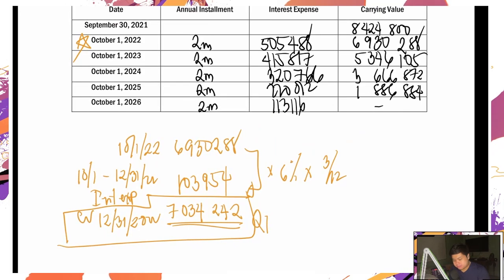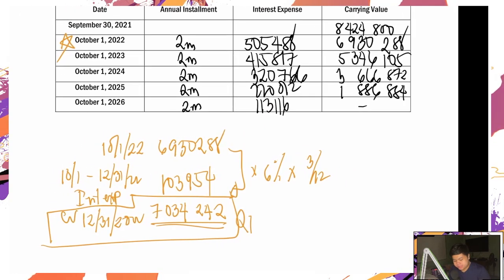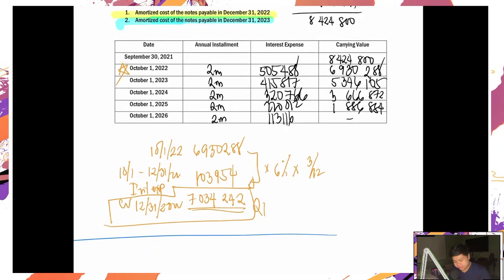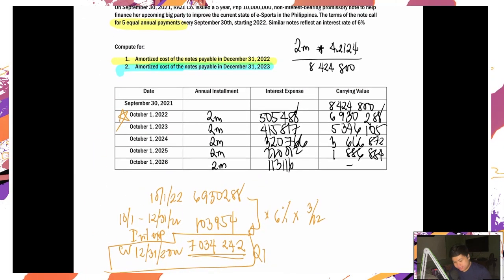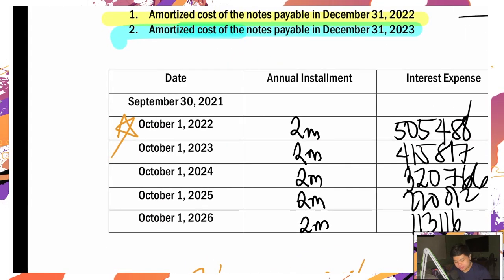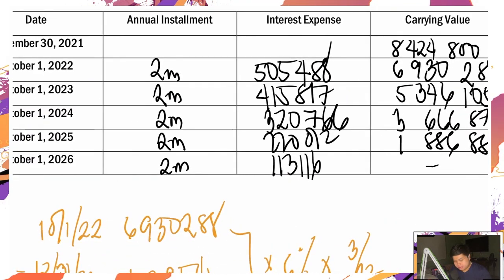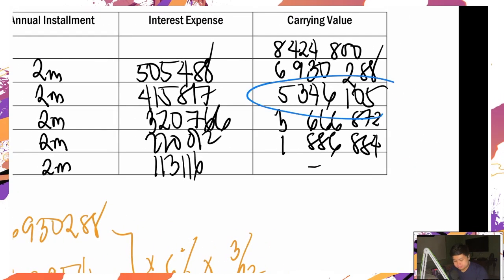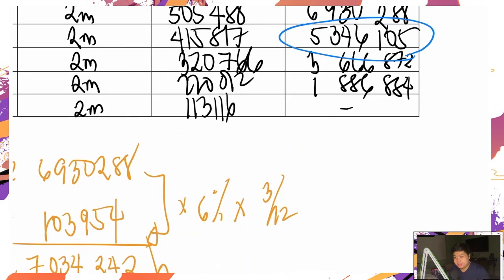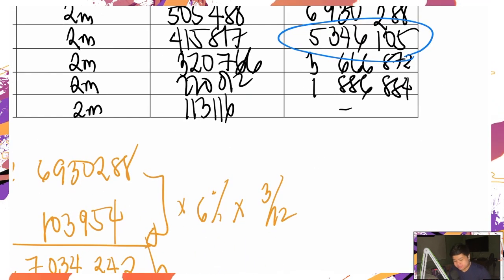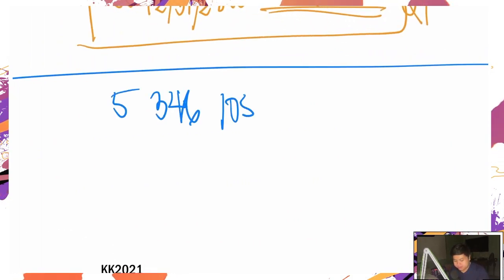Paano yung question number 2? Same logic. Ang hinihiling: amortized cost on December 31, 2023. So I can just use this — carrying value as of October 1, 2023: 5,346,105.